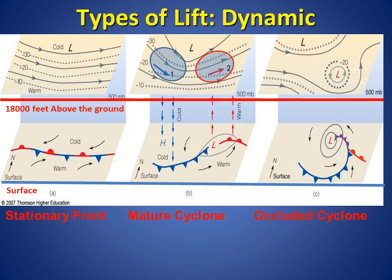In the left diagram we have westerly winds at the 18,000-foot level with a stationary front at the surface, with cold air to the north and warm air to the south. In the middle diagram we have a trough of low pressure in the upper levels. We have divergence of winds to the east of the trough as denoted by the red oval, and convergence to the west of the trough as denoted by the blue oval.